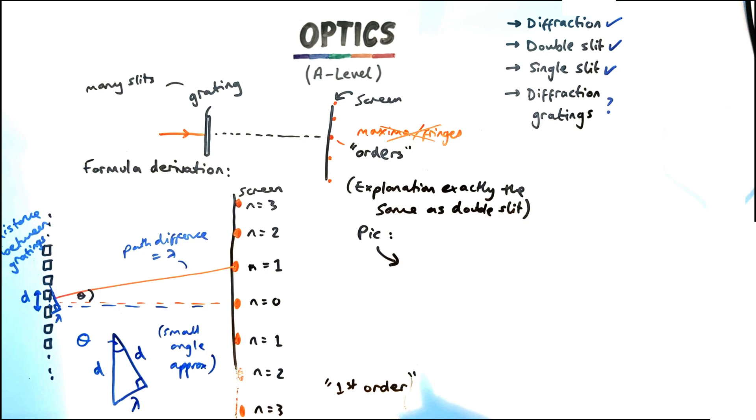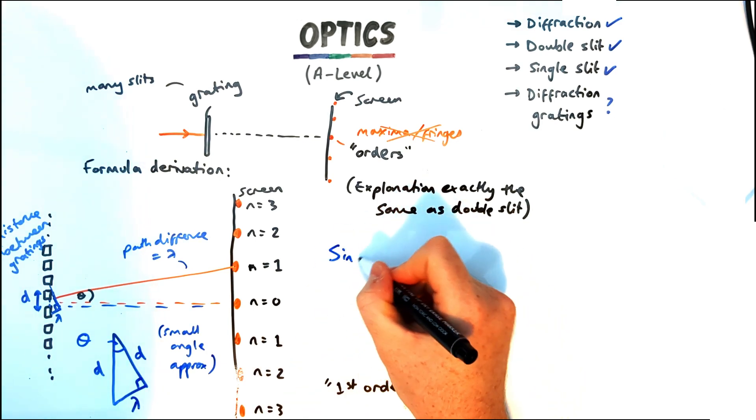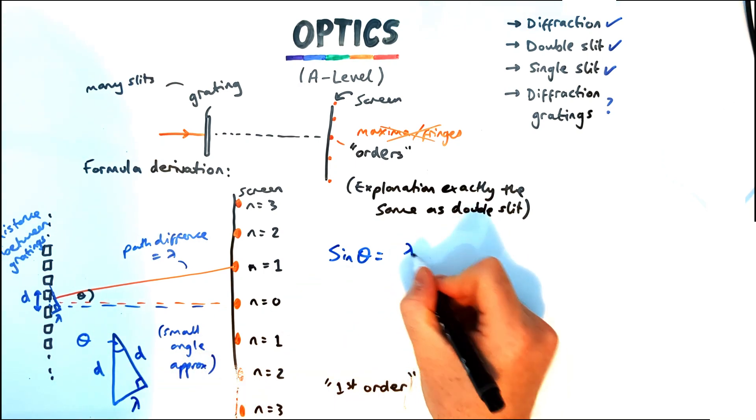So using sine theta again we can say sine theta equals the wavelength opposite divided by d for n equals one.